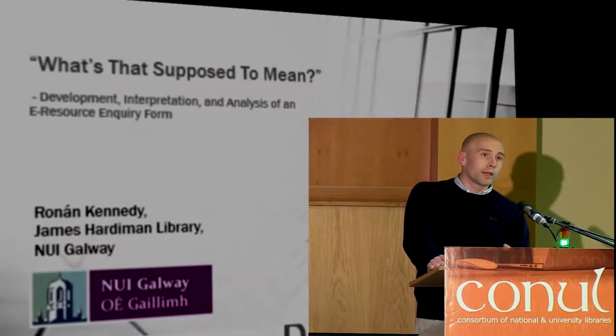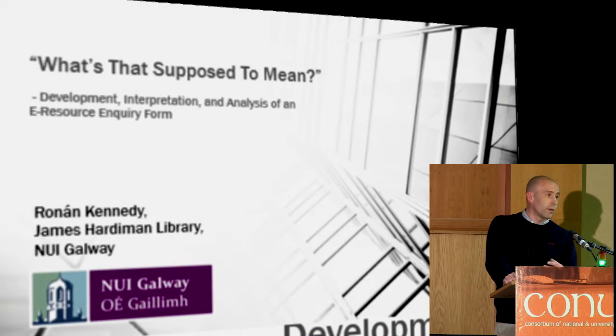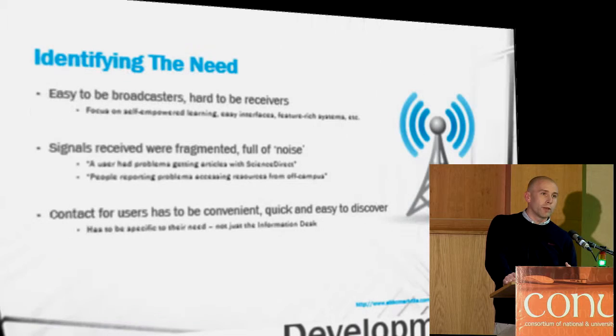So we'll start with the standard background slide. If we consider the library as a kind of a broadcaster-receiver model, obviously we're set up to be primarily built as broadcasters. We arrange our information, we categorise it, we organise it, and we kind of let it out there for the user community. We tend to push a lot of information out there. Our focus, quite rightly, is on being broadcasters, but not necessarily as receivers of information. So from time to time, when problems do arrive, how do we set ourselves up to be clear receivers of information?